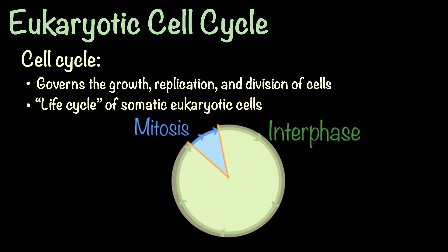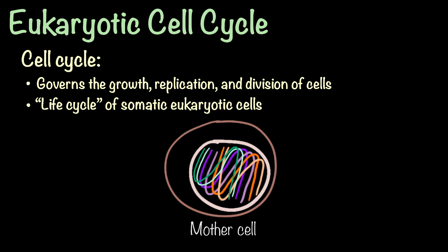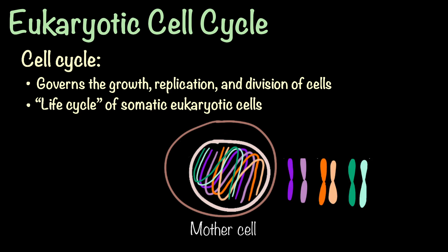Let's say we have a cell that's right at the beginning of the cell cycle — this is the mother cell. I'm only going to draw out the relevant parts of the cell. Here we have the nucleus, and inside the nucleus we have the DNA. For simplicity, we'll say that this cell only has six chromosomes, or three homologous pairs of chromosomes, or 2n chromosomes.